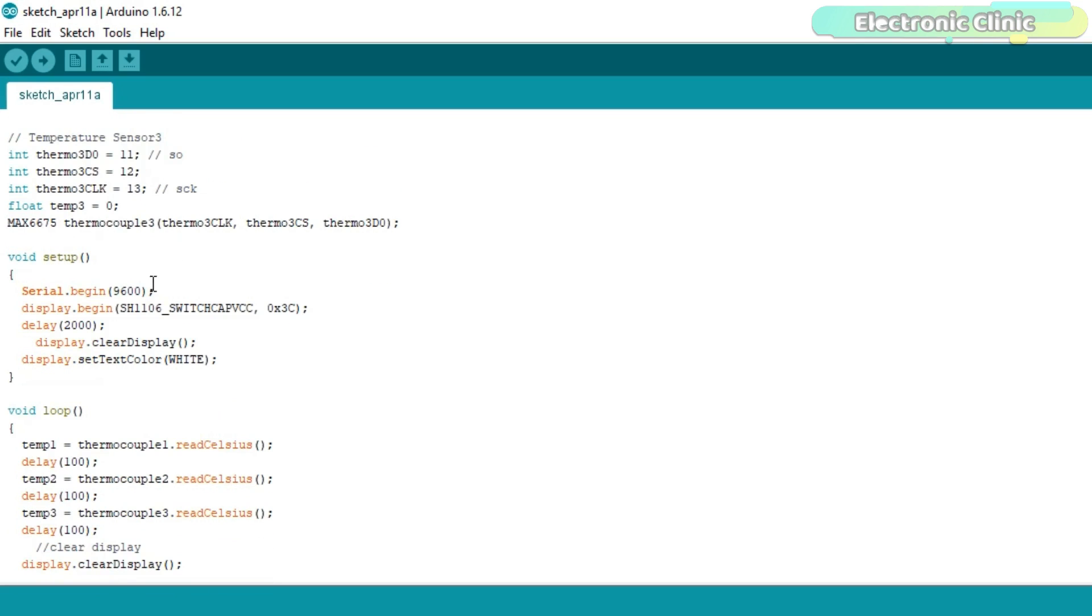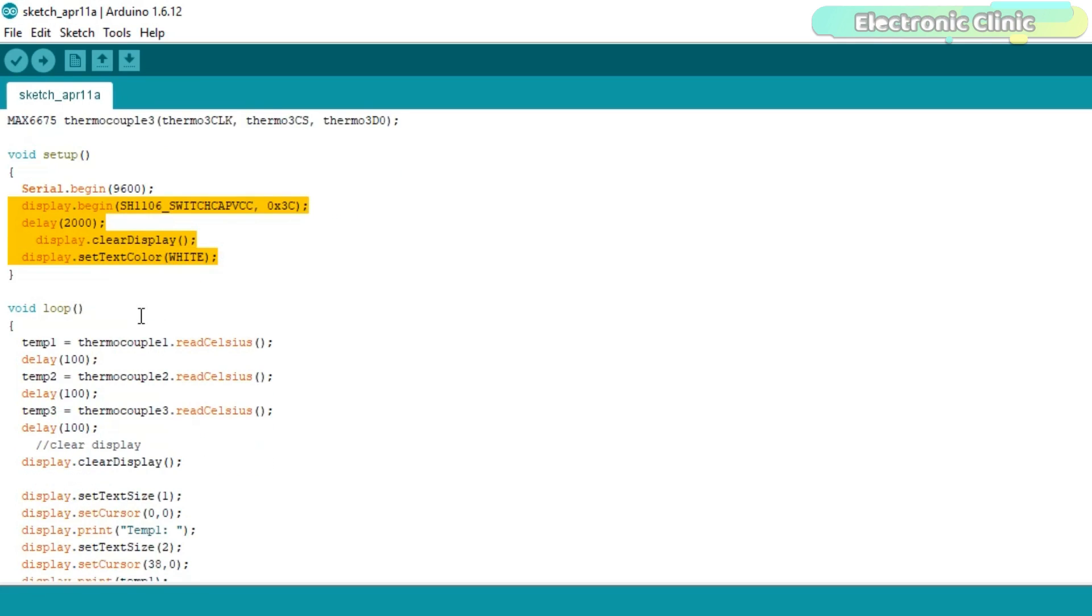Inside the void setup function, I started by activating the serial communication using the serial.begin function, while 9600 is the baud rate. I will only use this for debugging purposes. These instructions I have already explained in the OLED display tutorial.